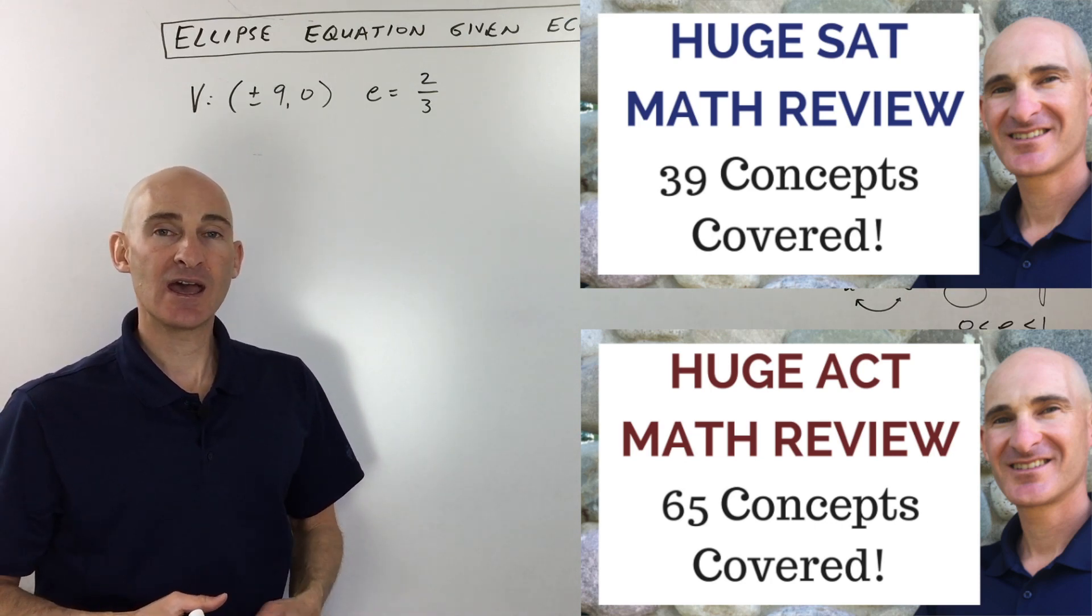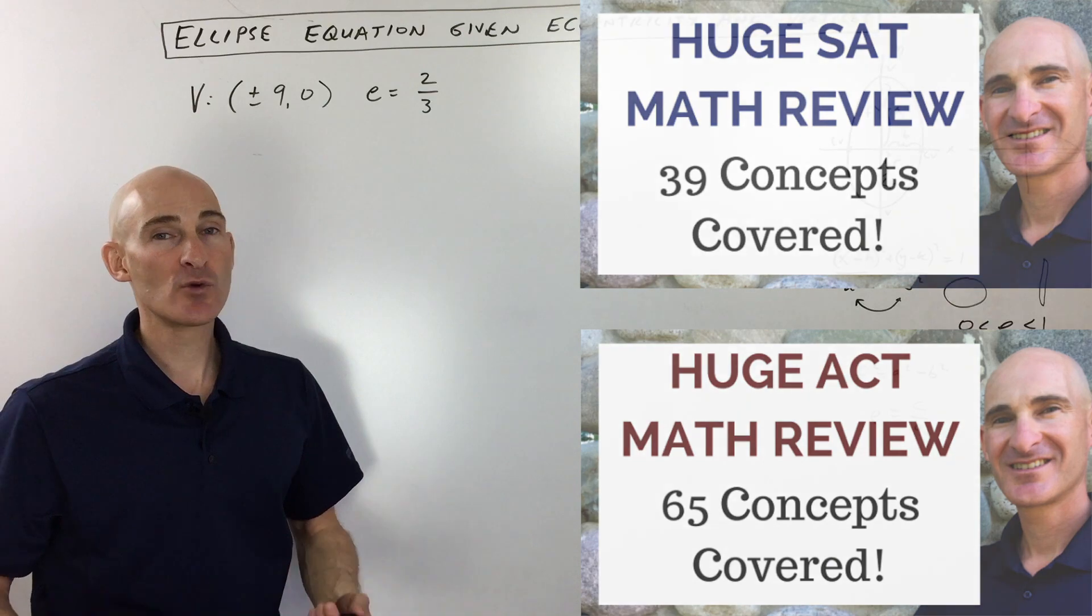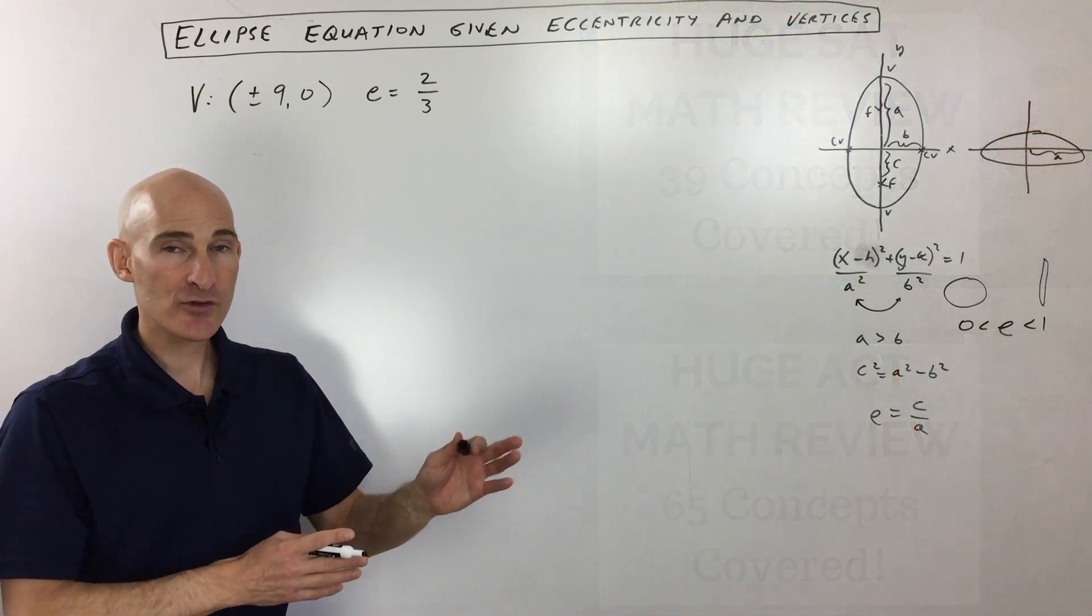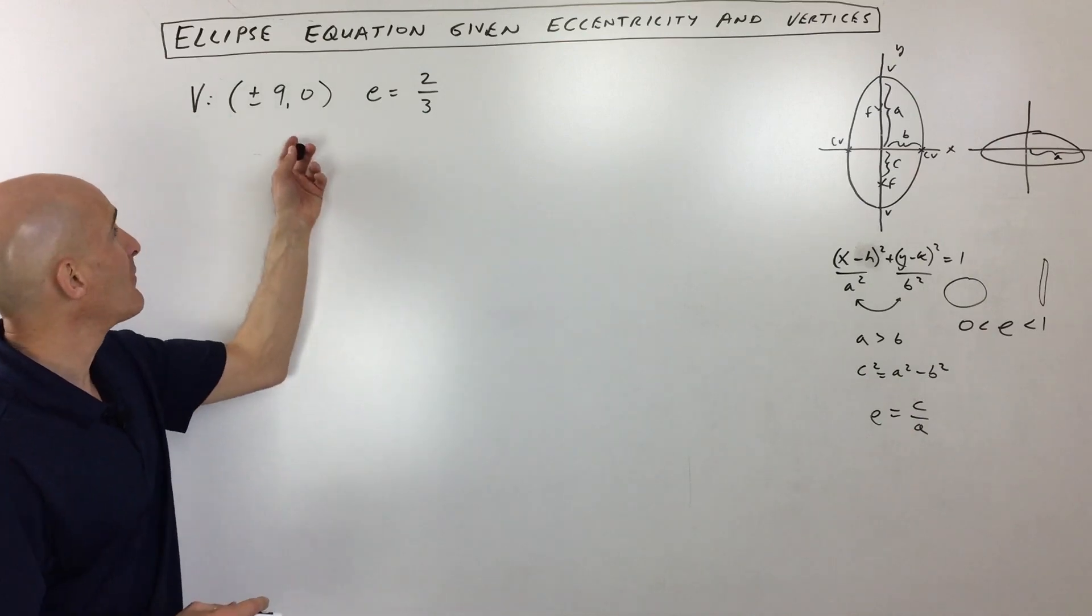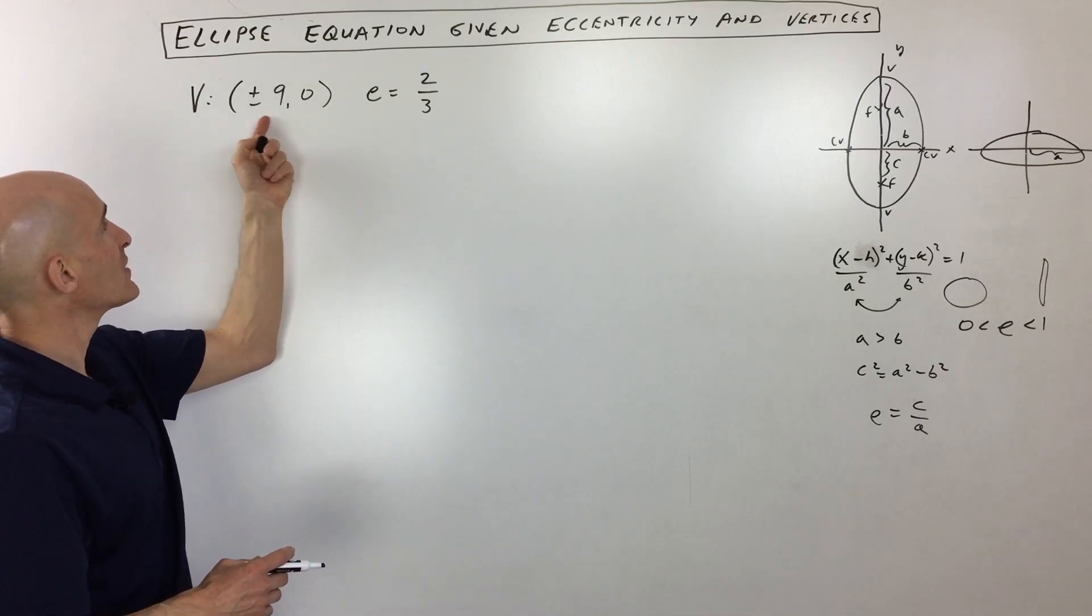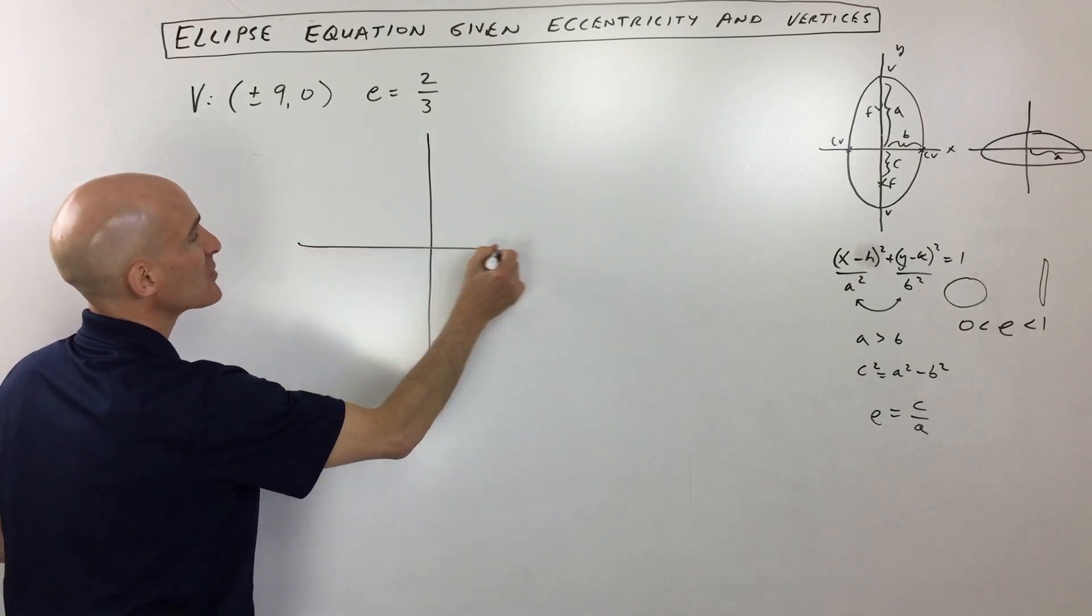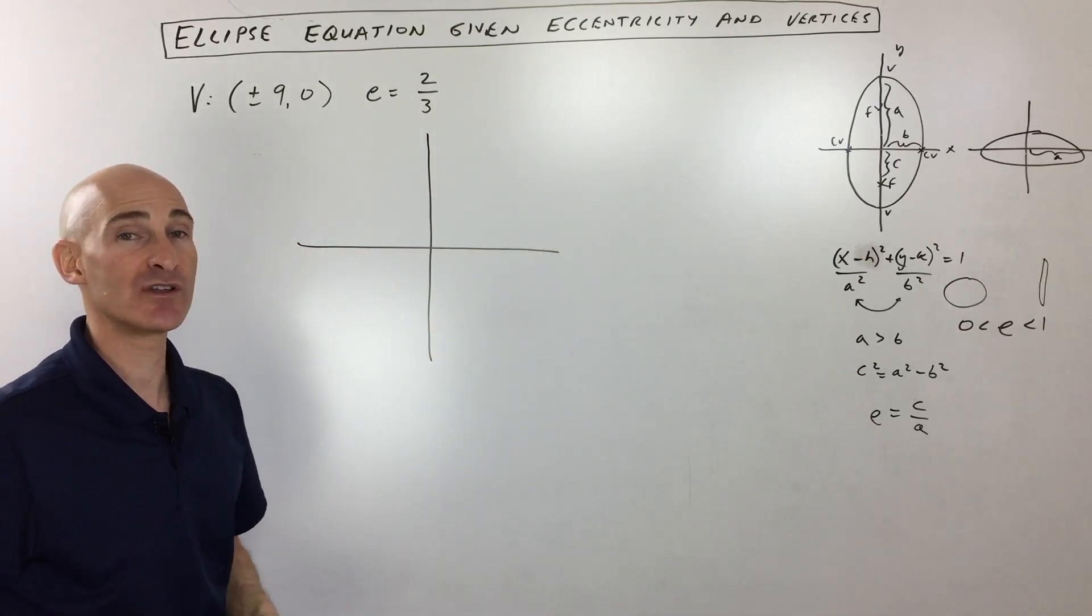And if you're preparing for that test and you really want to boost your score, a lot of students have found great benefit from that. So check out those courses, but let's go to this problem now and see if we can solve it. So they're giving us the vertices are at plus or minus nine comma zero. So I always like to draw a sketch just so I can see what we're dealing with.